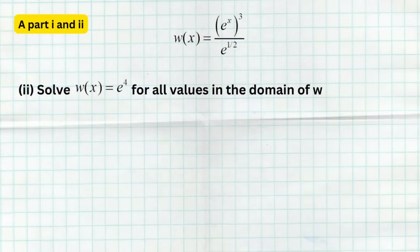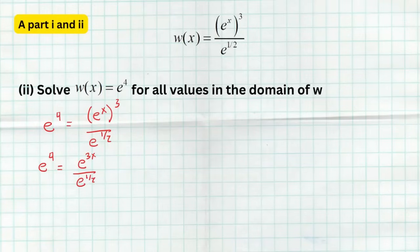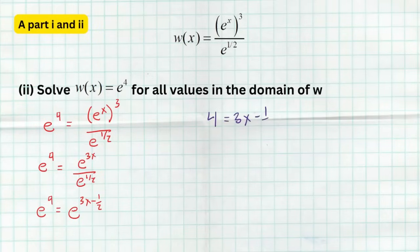Here's another example: w(x) = eˣ³ / e^(1/2), and we're asked to solve where the function equals e⁴. Set the function equal to e⁴. Using exponent rules, a power raised to a power means we multiply, giving e^(3x) divided by e^(1/2). Dividing with the same base means subtracting powers, so e⁴ = e^(3x − 1/2). Now use the one-to-one property: when bases on each side are equal, the exponents must also be equal. Therefore 4 = 3x − 1/2.